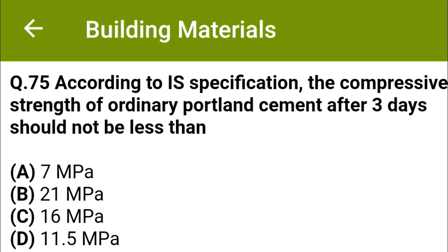According to IS specification, the compressive strength of ordinary Portland cement after 3 days should not be less than: option A, 7 MPa; option B, 21 MPa; option C, 16 MPa; option D, 11.5 MPa. The correct answer is option C, 16 MPa.